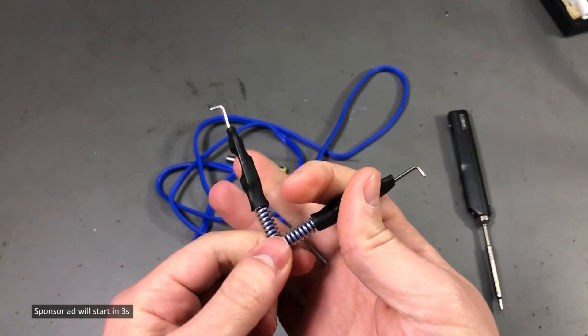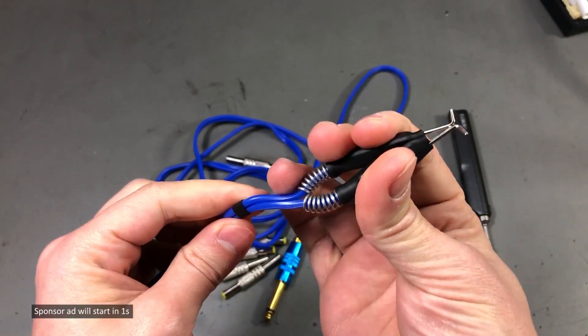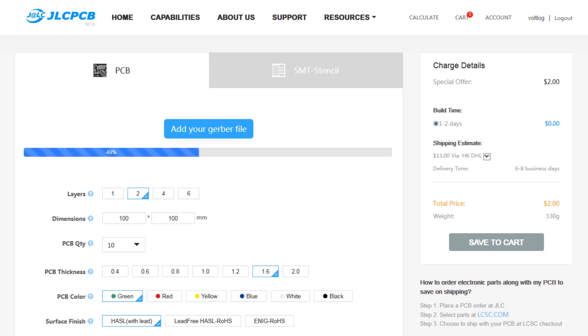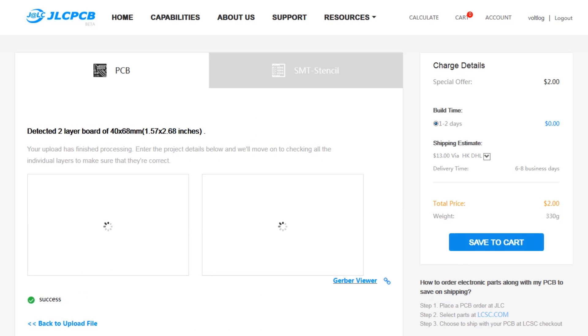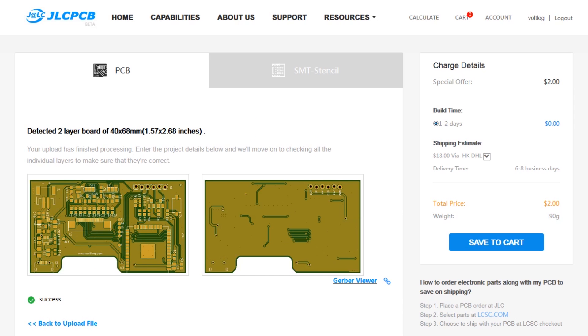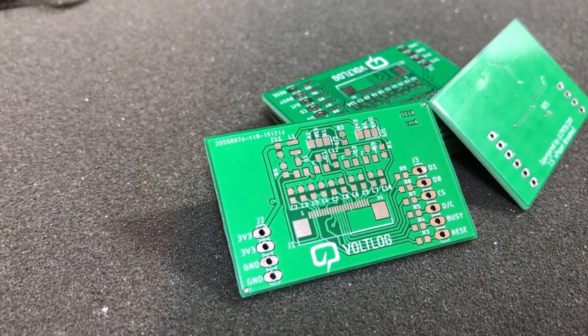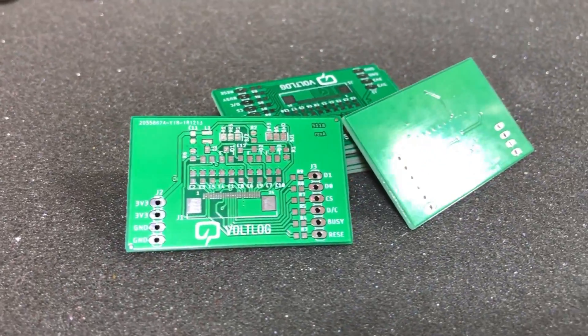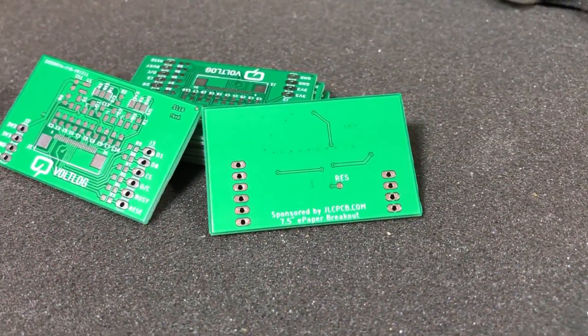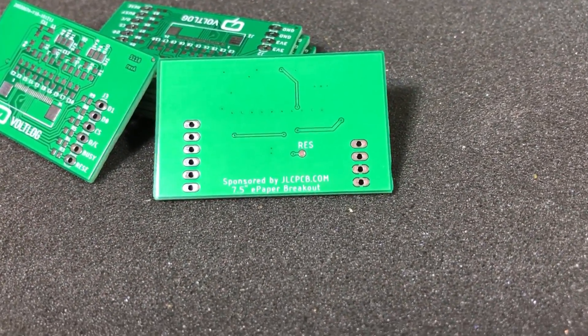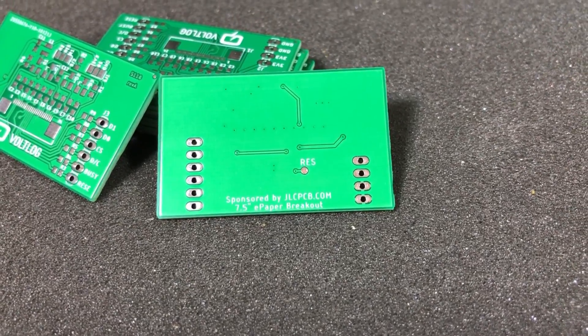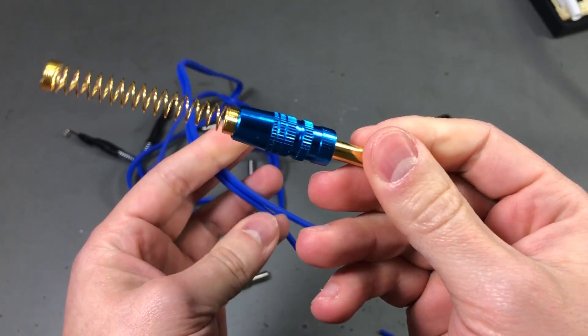This video is sponsored by JLCPCB.com who in the past months upgraded their manufacturing line so they are now offering 24 hours turnaround time for prototype PCBs for the same price of just $2. Prototyping is now faster and cheaper than any other place so it's definitely worth checking them out.